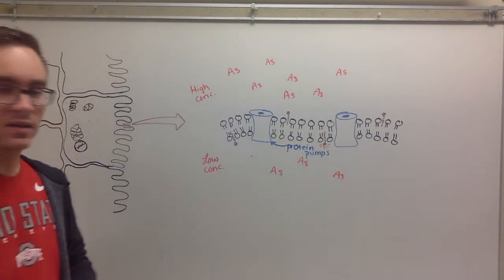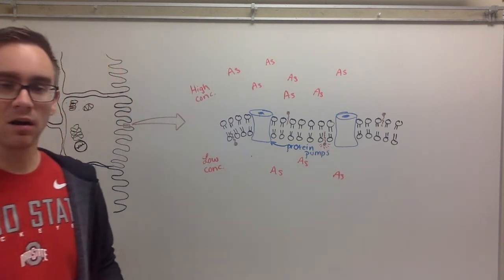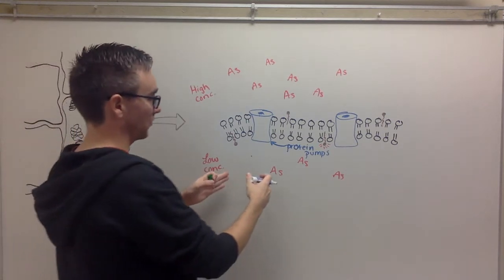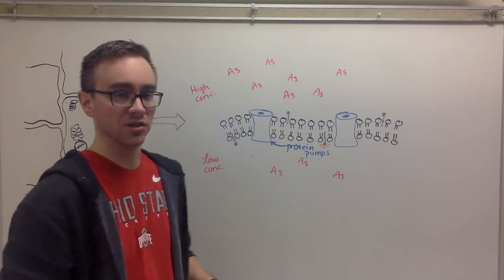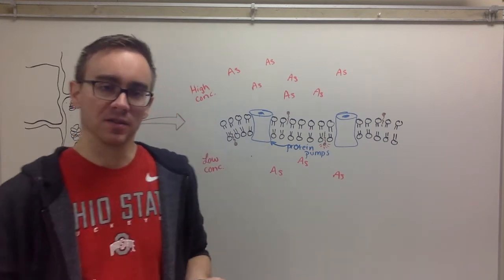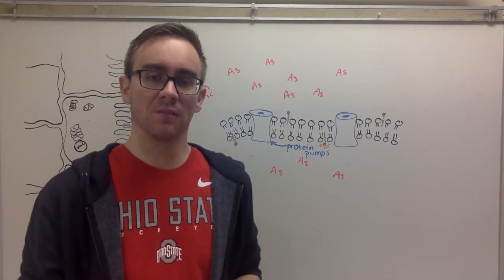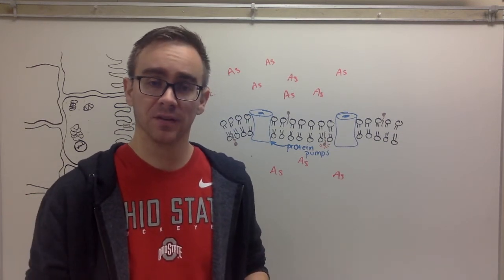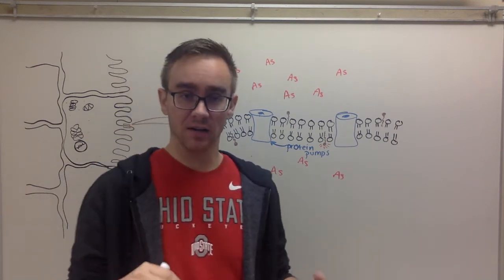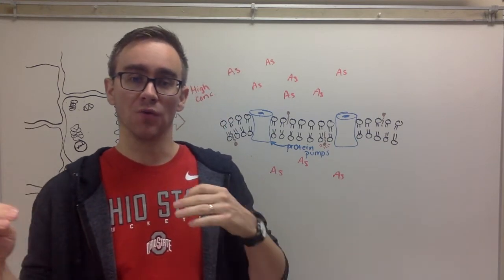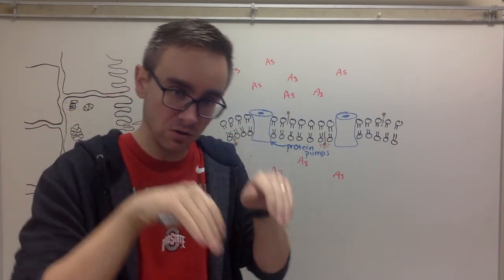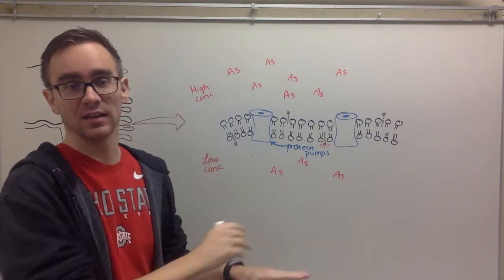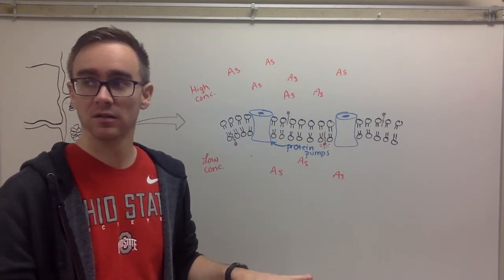These protein pumps and what they do is they are able to allow molecules to go from low concentration to high concentration. So now let's think about this though. At the very beginning of talking about transport across the membrane, I used the example of a ball rolling down a hill. It takes very little outside energy to make a ball go from high elevation down to low elevation. It doesn't really take that much energy. It's called passive transport.